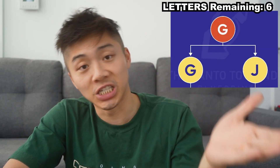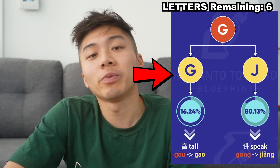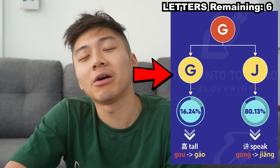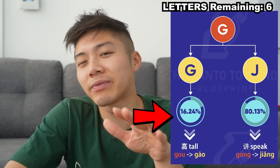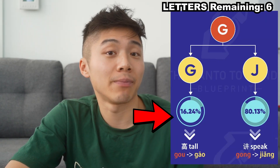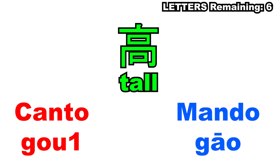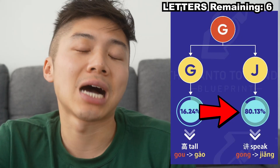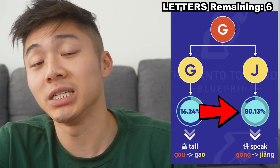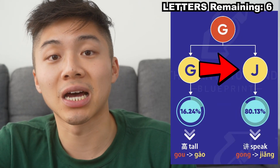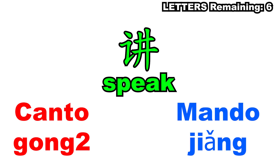Next we have the one we went through earlier. G in Cantonese becomes either a G in Mandarin or it becomes a J. It becomes a G about 16% of the time — so 'gou' for tall becomes 'gao' in Mandarin. Most of the time it will become a J — so 'gong' meaning 'to speak' in Mandarin becomes 'jia'.